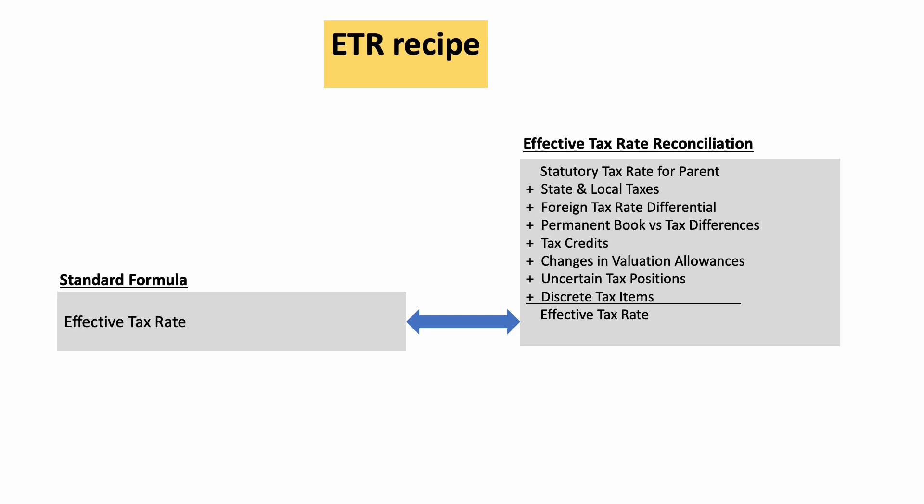The next item is uncertain tax positions, which essentially means the tax controversies that your company is engaged in. Those also flow into your tax expense for GAAP purposes and can cause noise in your effective tax rate. The last item is discrete tax items — any out-of-period tax adjustment that you need to recognize may also have an impact on your effective tax rate. Those are generally the key items which affect your ETR reconciliation.